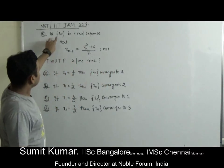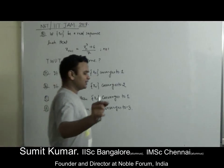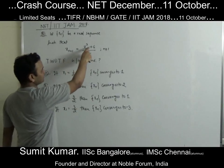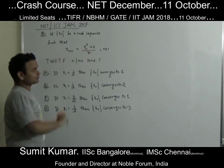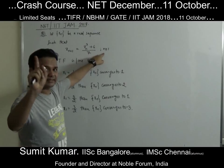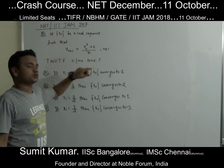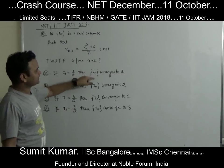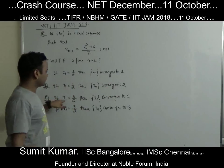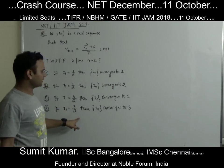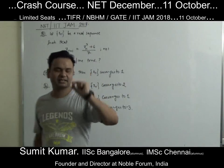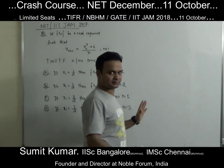The question was asked in IIT JAM 2017. The question is: let XM be a real sequence, where XM+1 = (X³ + 6) / 7, for N greater than or equal to 1. Then which of the following are true: if X1 = 1/N then XM converges to 1; if X1 = 3/2 then XM converges to 1; if X1 = 3/2 then XM converges to -3. Lot of students have made mistakes in this particular question.